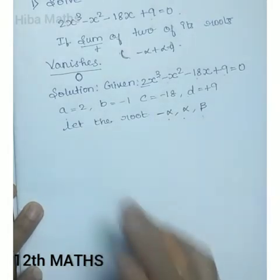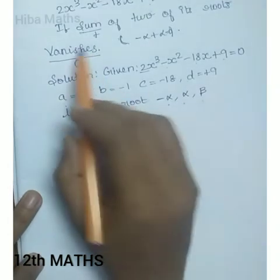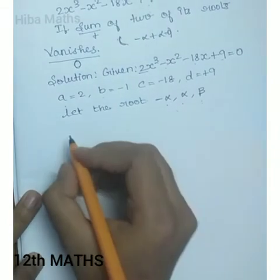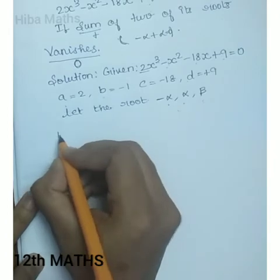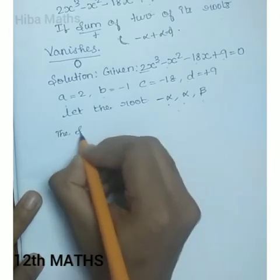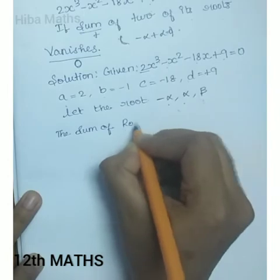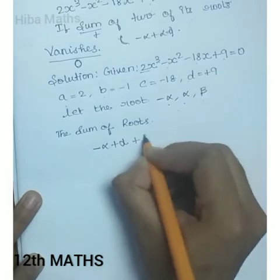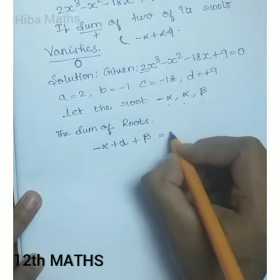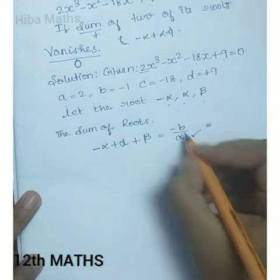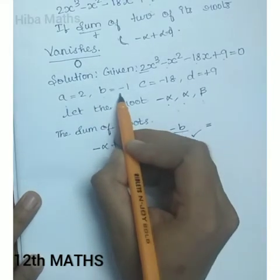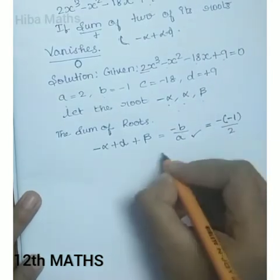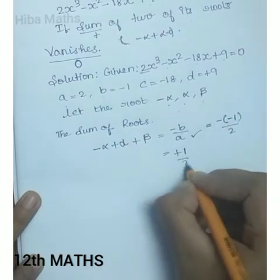The first condition is the sum of two of its roots vanishes. The sum of roots (-α) + α + β equals -b/a. Substituting: minus of -1 divided by 2, that is minus of minus is plus 1/2. So beta = 1/2.